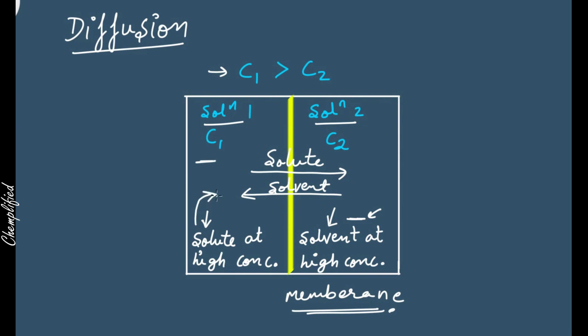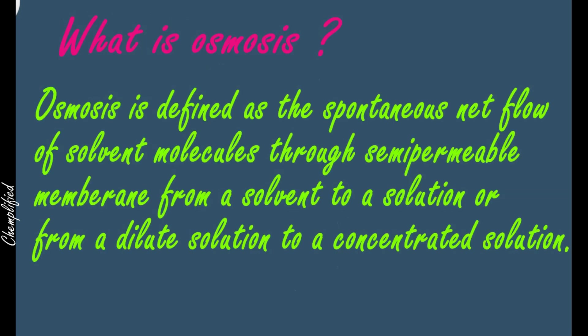That is what happens in diffusion — the one which is in higher concentration will move to the next container. In diffusion, both solute and solvent move from one place to another. Properly defined: the net movement of any substance from the region of higher concentration to their lower concentration is called diffusion. This process will continue until the concentration of solute and solvent becomes equal in both containers.